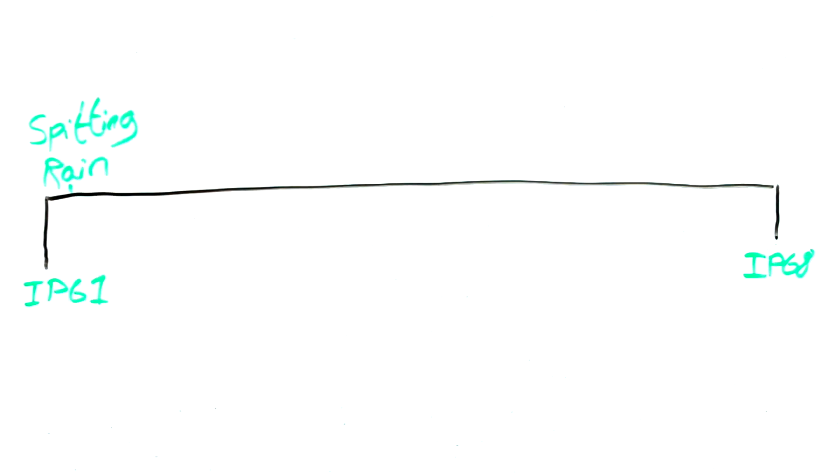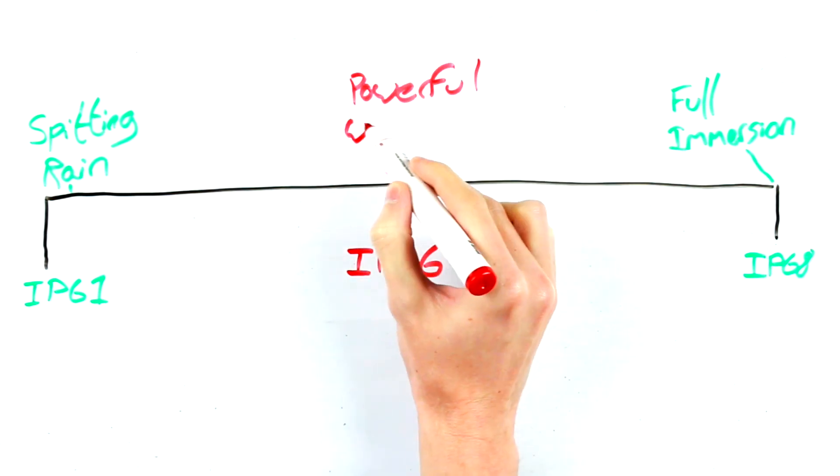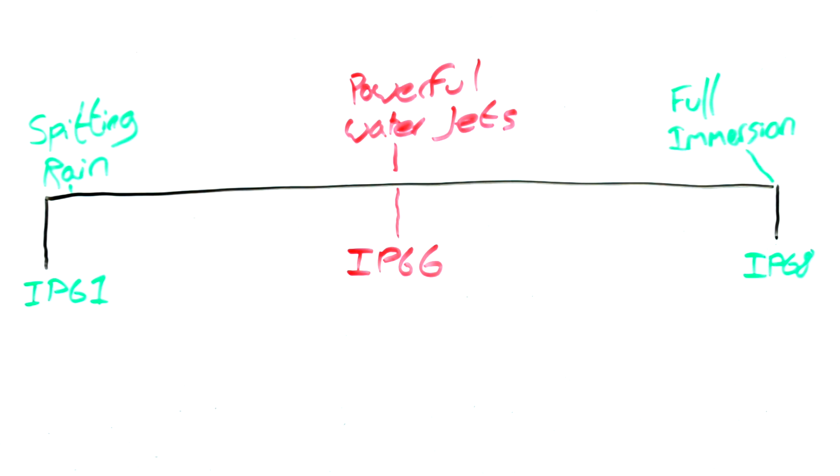From spitting rain and condensation at 1 right up to full immersion in deep water for extended periods of time at 8. The most common IP rating for outdoor cameras is IP66, which not only protects completely against dust but also heavy rain and powerful jets of water.